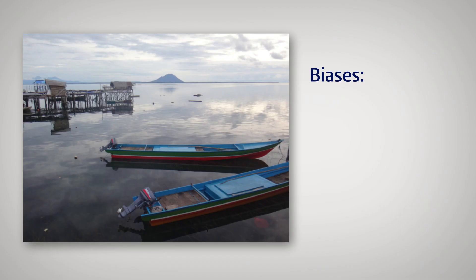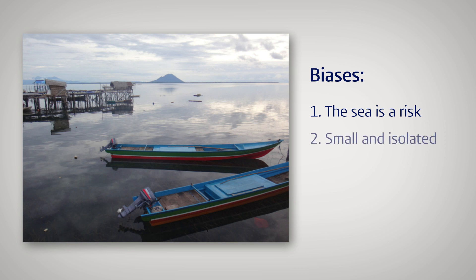First bias: the sea poses a risk for islands. Second bias: Nine Island is small and isolated. Third bias: the closest capital city has the knowledge and resources to help.